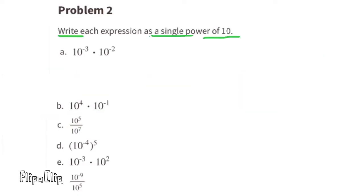Problem number 2. Write each expression as a single power of 10. Part A: 10 to the power of negative 3 times 10 to the power of negative 2.